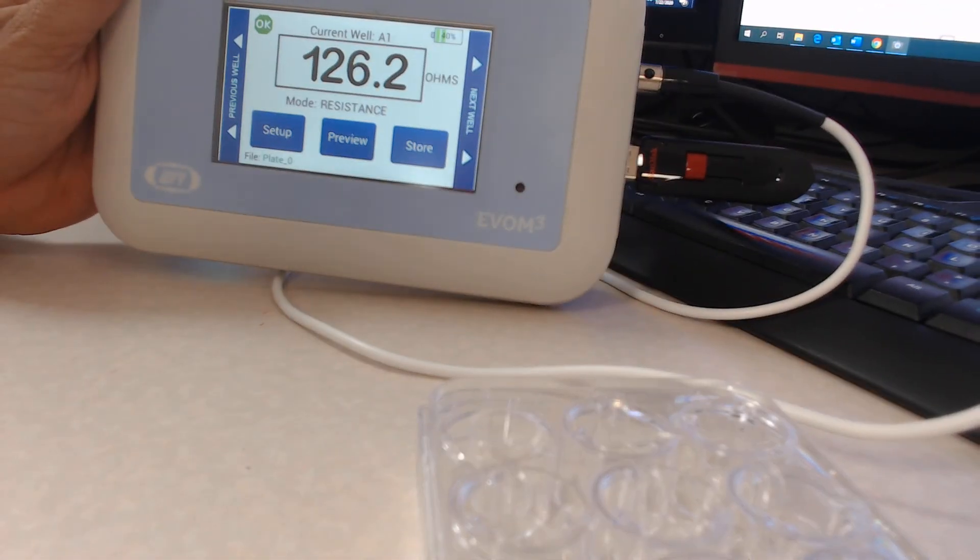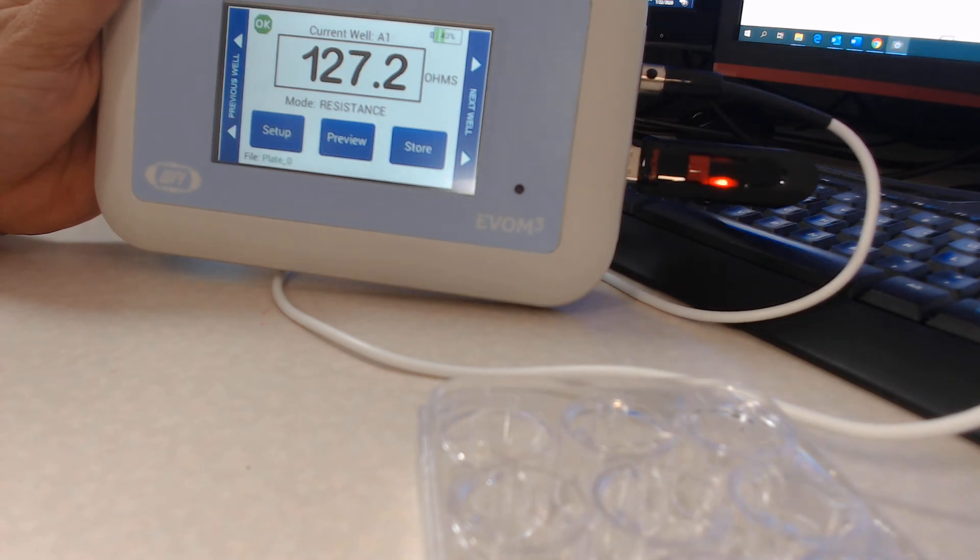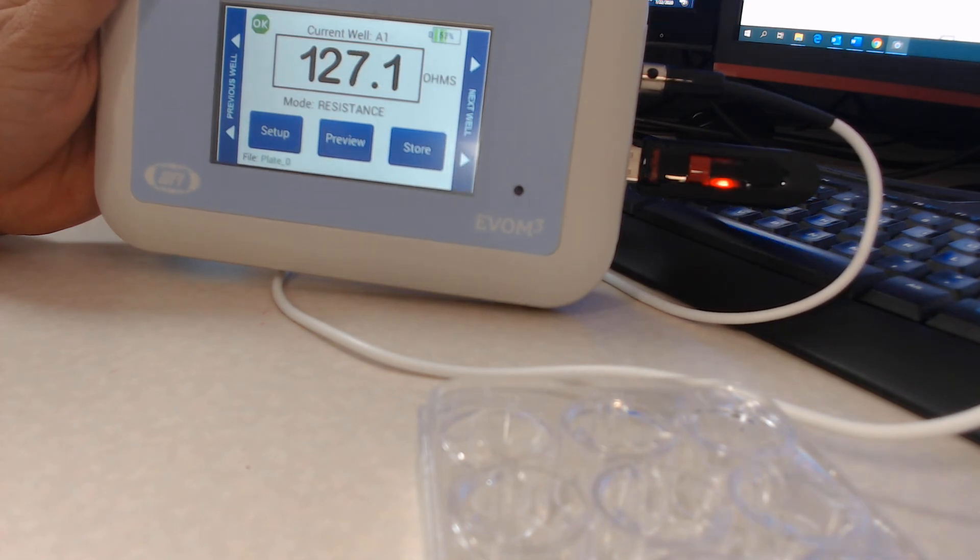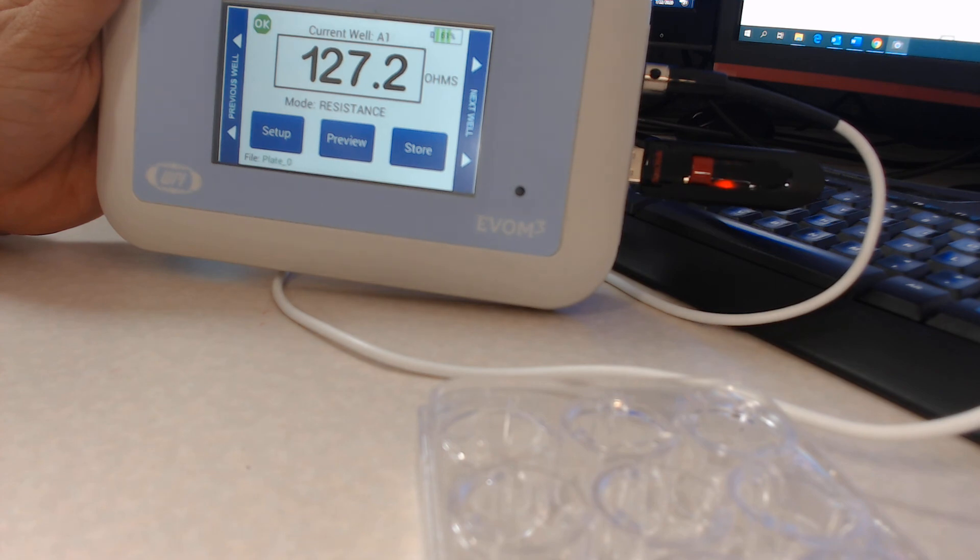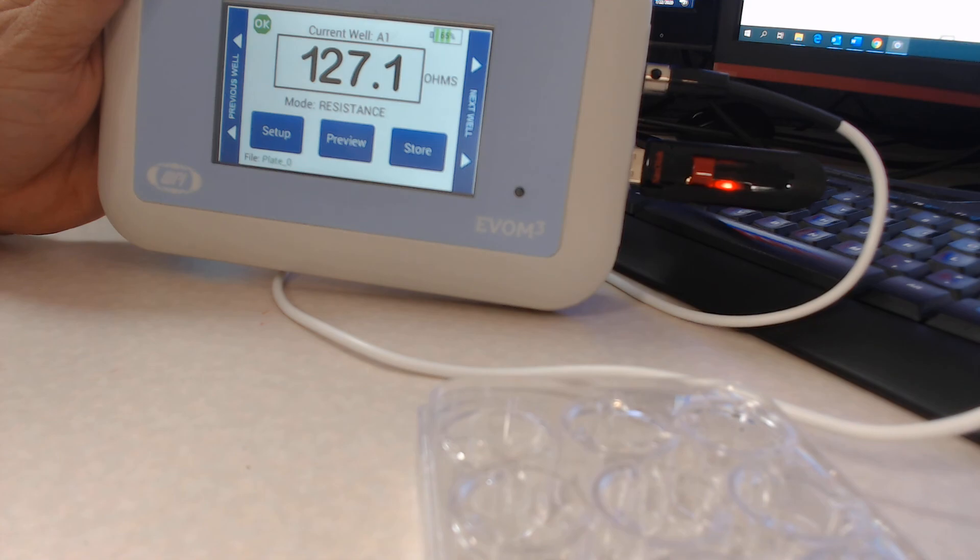When you reconnect it to the Evolm3, you should be able to see a stable readout. With the Corning 3460 and 1x PBS, I was able to get a readout of 127 ohms.